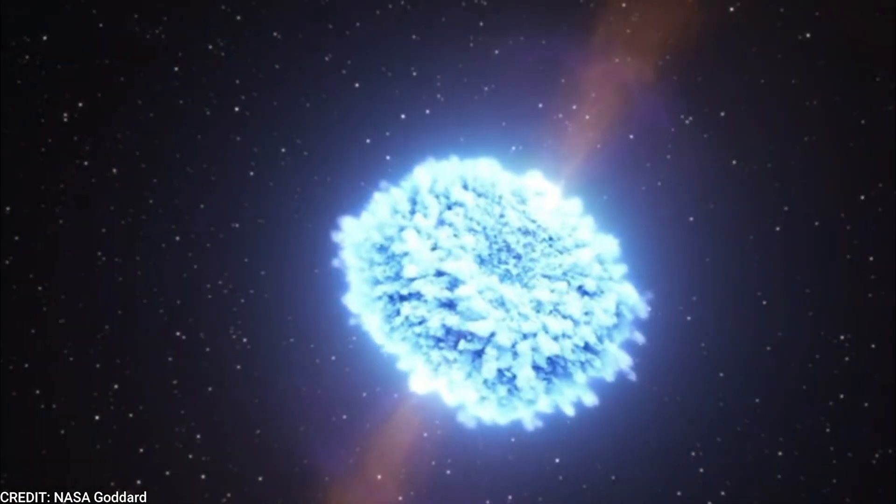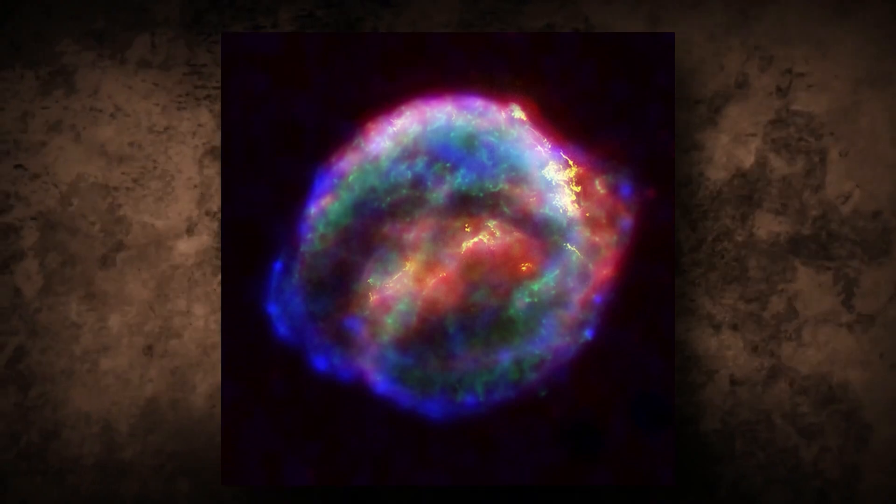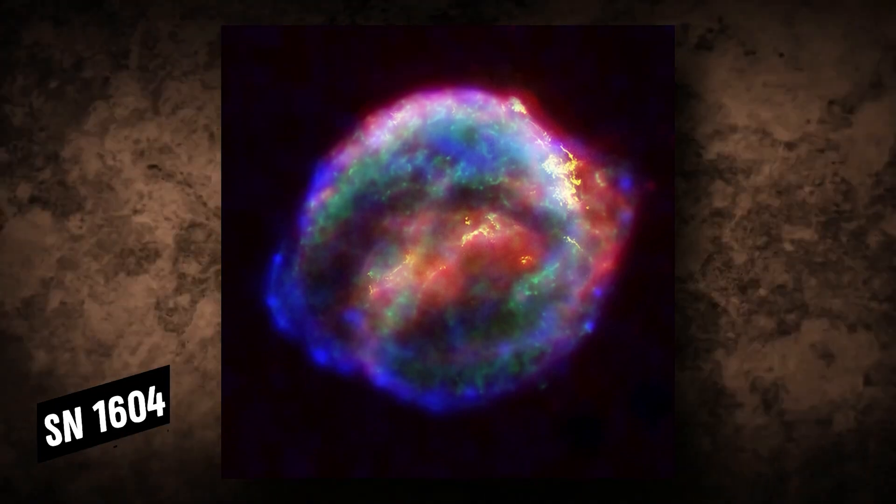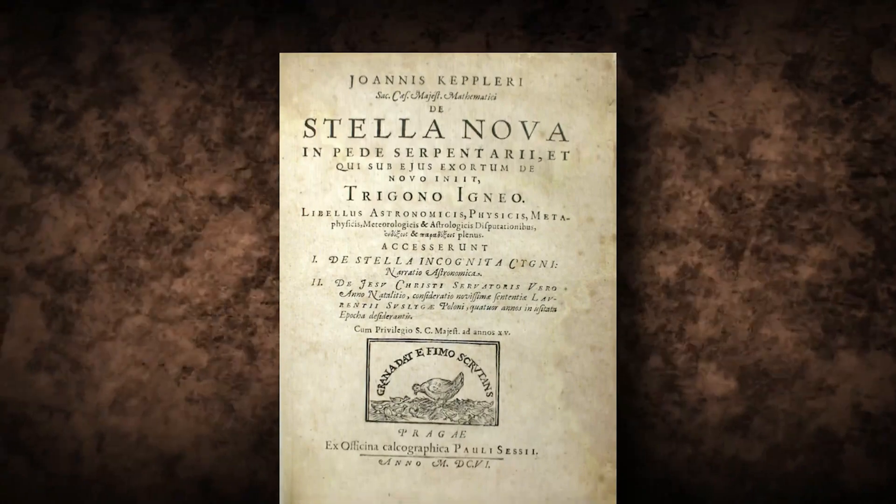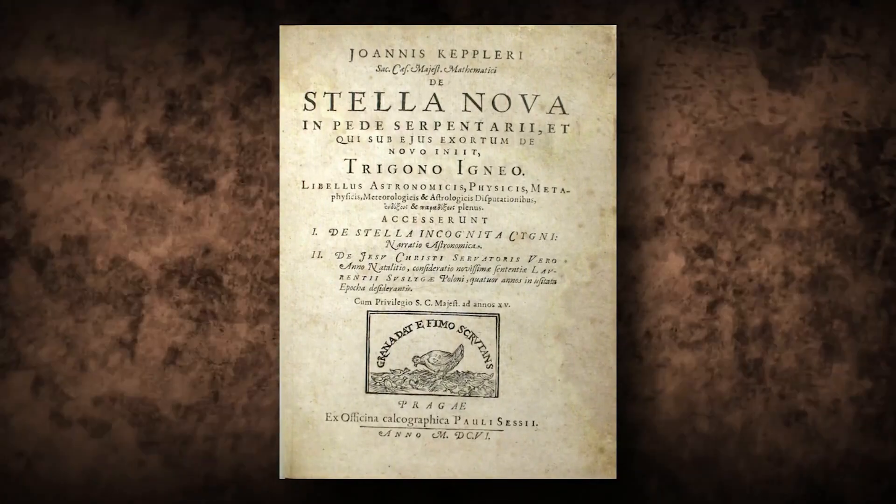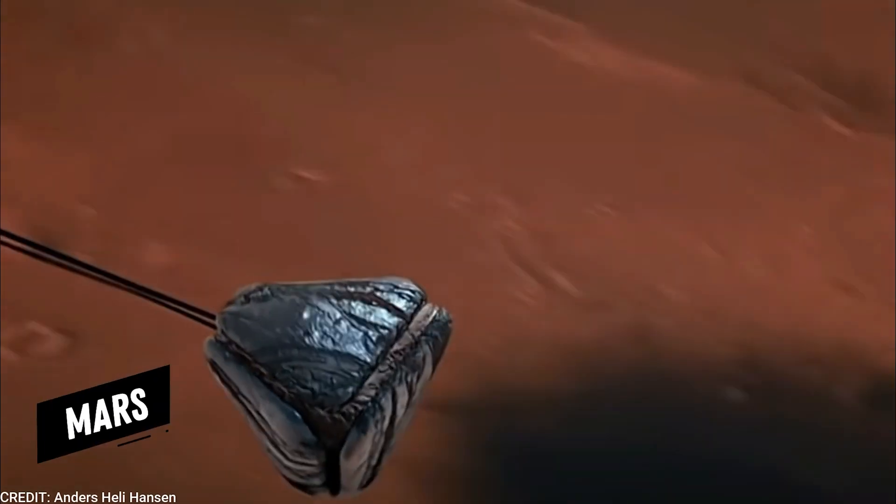At the peak of its brilliance, the star, which is now referred to as SN 1604 or Kepler's supernova and which is documented in Kepler's book De Stellanova, grew brighter than both Jupiter and Mars.